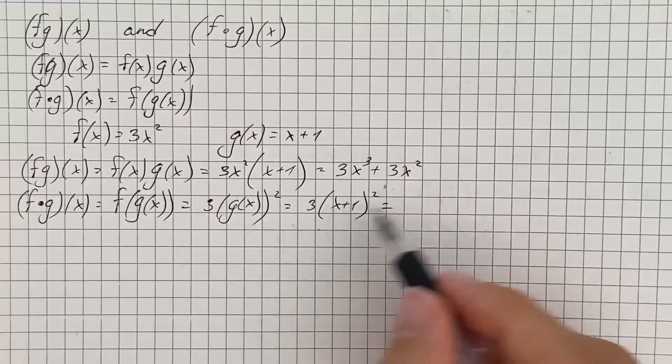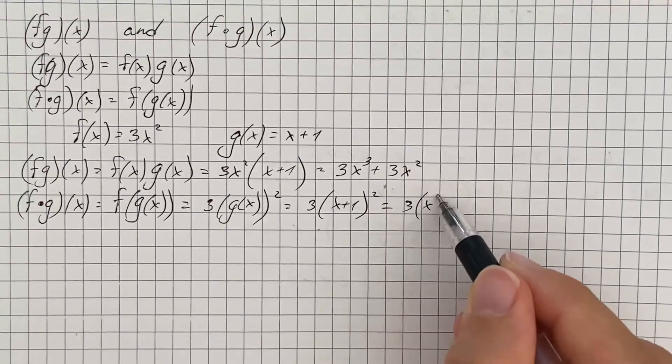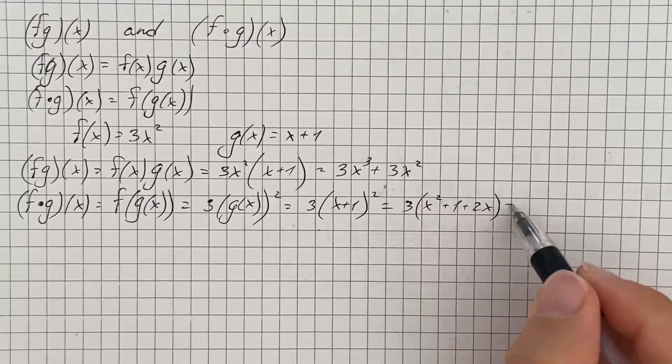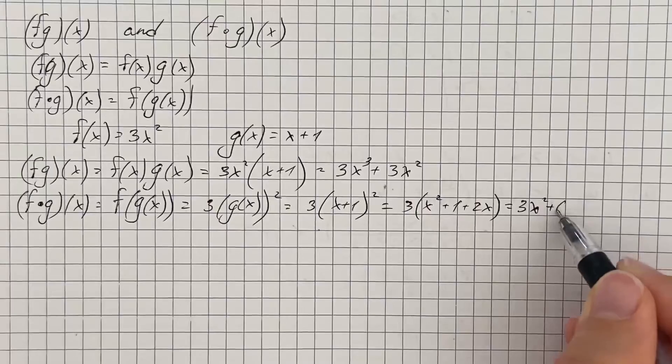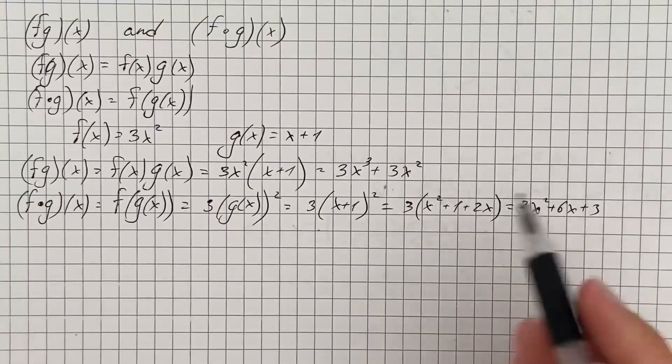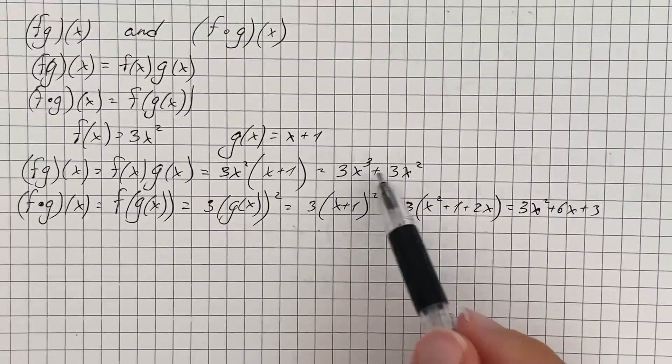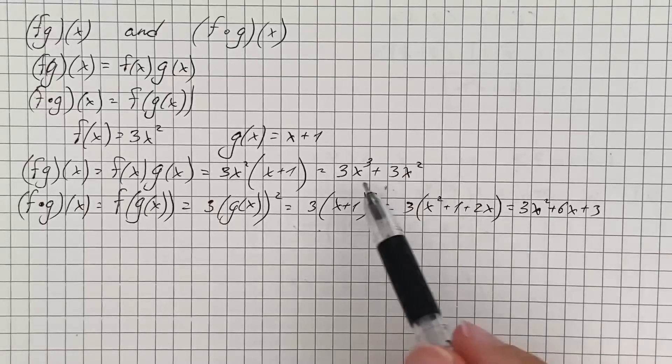We simplify and we get 3 times x squared plus 1 plus 2x, and the final answer is 3x squared plus 6x plus 3. So we get two different answers and that's the difference.